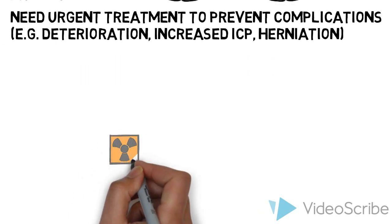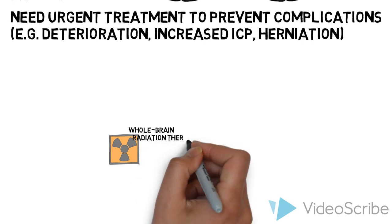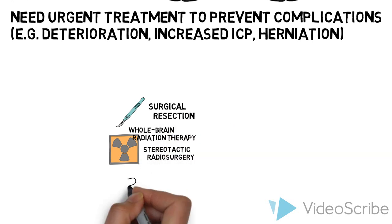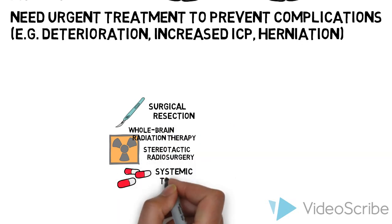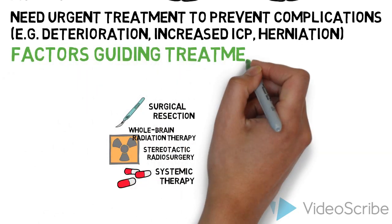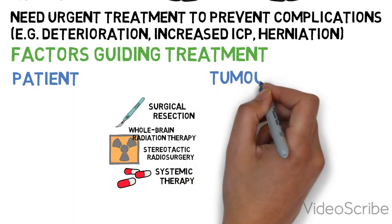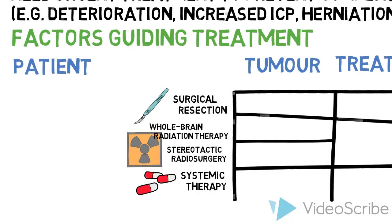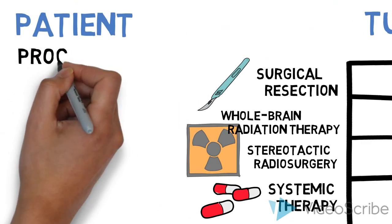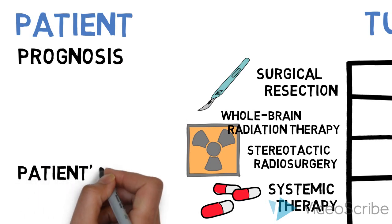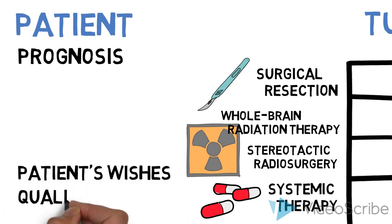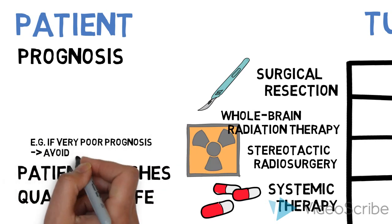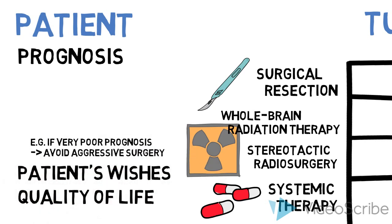Options for treatment of brain metastases include whole brain radiation therapy, stereotactic radiosurgery, surgical resection, and systemic therapy. The decision on what treatment to use is guided by patient, tumor, and treatment factors. Patient factors to consider include the patient's performance status and prognosis, the patient's wishes, and their quality of life. For example, in a patient whose prognosis was very poor, we would tend not to treat them with aggressive surgery.